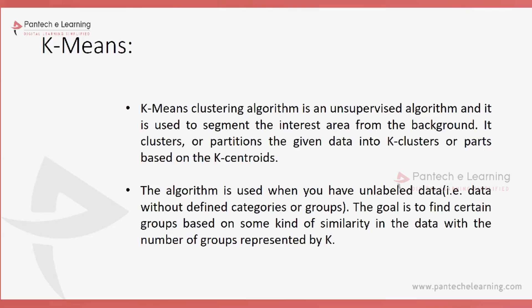For k-means, we use different centroid values which work on the median formula. The image has a separate range, and from that range it collects data according to the cluster value. The minimum cluster value is two, representing zero and one. You can go up to a maximum of eight clusters in image segmentation. For binary segmentation, you can vary from zero to 255, which is also widely used for multiple segmentation purposes.